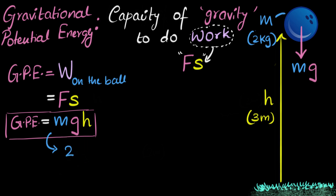So 2 kilograms times g, how much is g? g is 9.8, but we can take it as 10, we can round it off, times the height which is 3, 3 meters. And how much does that give us? That gives us three twos are six, 6 times 10 is 60.